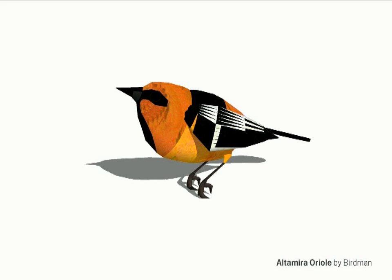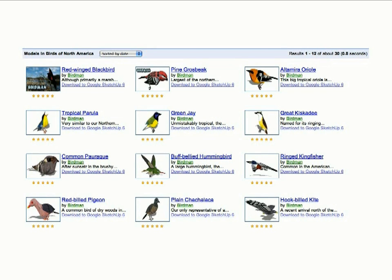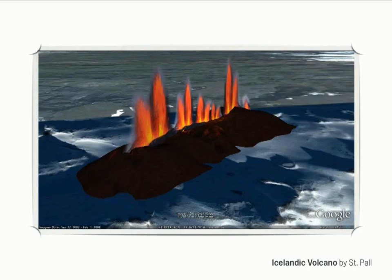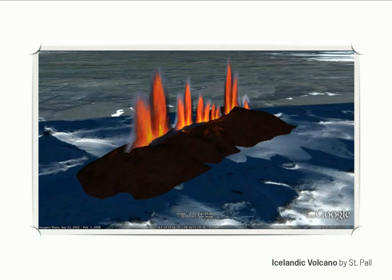Why is his name Birdman? It turns out his preoccupation in SketchUp is to model the birds of North America. If you do a search just for birds, you've got around 1,300 birds in the 3D Warehouse. And here — I'm not even going to try to pronounce this — this is the Icelandic volcano, modeled by a user named St. Paul. If you go to Google Earth and look at this region, this model will actually show up. This is the volcano itself erupting.